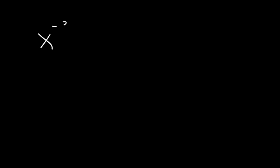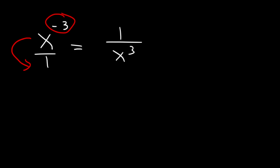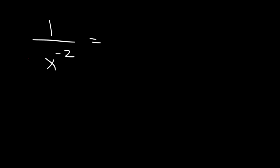Now you need to be familiar with negative exponents. x to the negative three is the same as 1 over x cubed. If you move the x variable from the top to the bottom, the exponent changes sign — it changes from negative three to positive three. So x to the negative four is 1 over x to the fourth. Likewise, if you have a negative exponent on the bottom, you can move the x variable to the top, and this will become positive x squared.